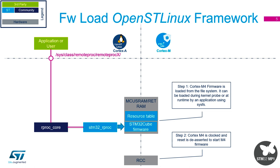When the application is running it calls remote proc, which loads the firmware into MCU RAM. The Cortex M4 will then have its clock enabled or disabled by the RCC — the reset clock control — as and when it needs to during the application. You might not want the Cortex M4 running all the time, and you can switch the clock on or off as needed.